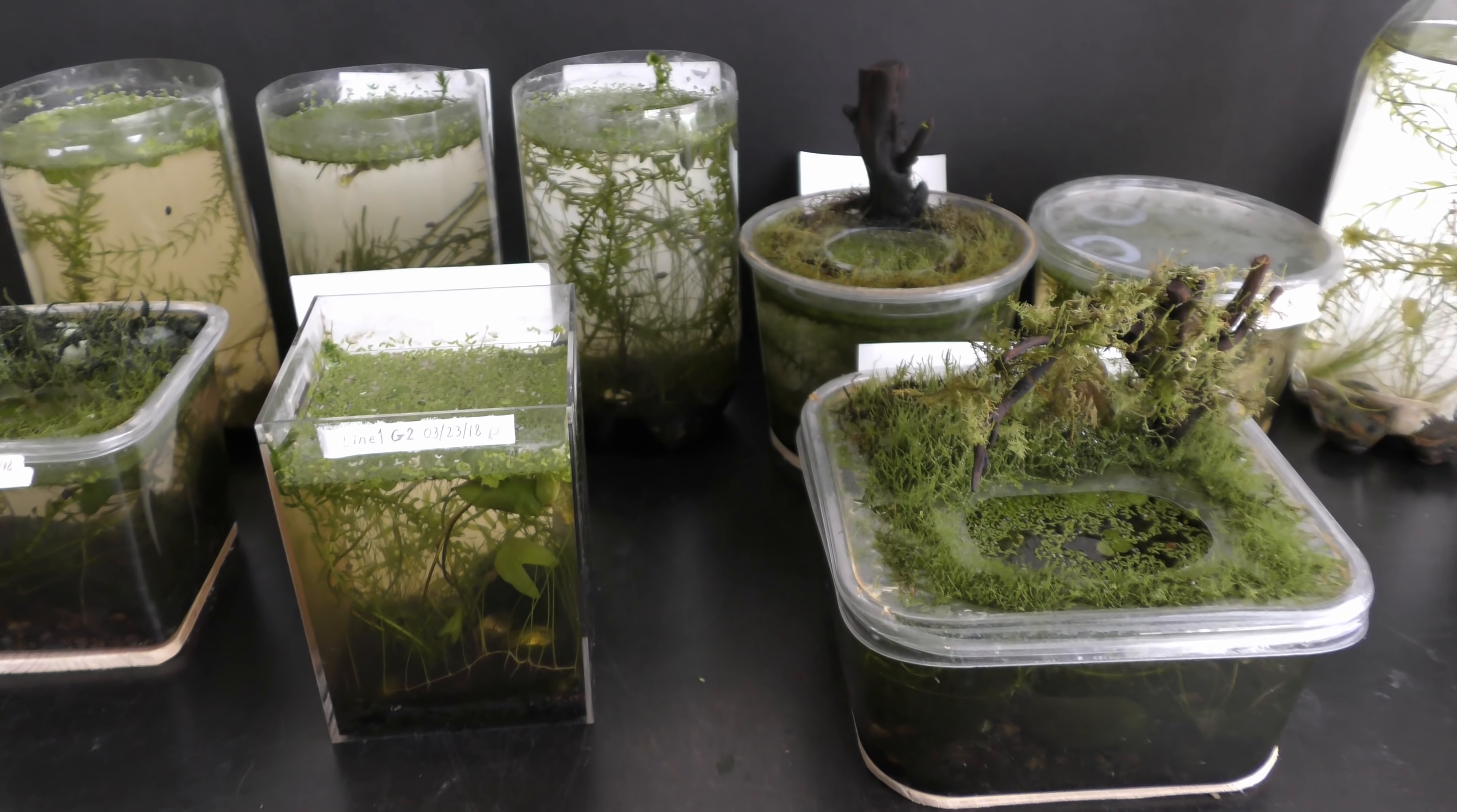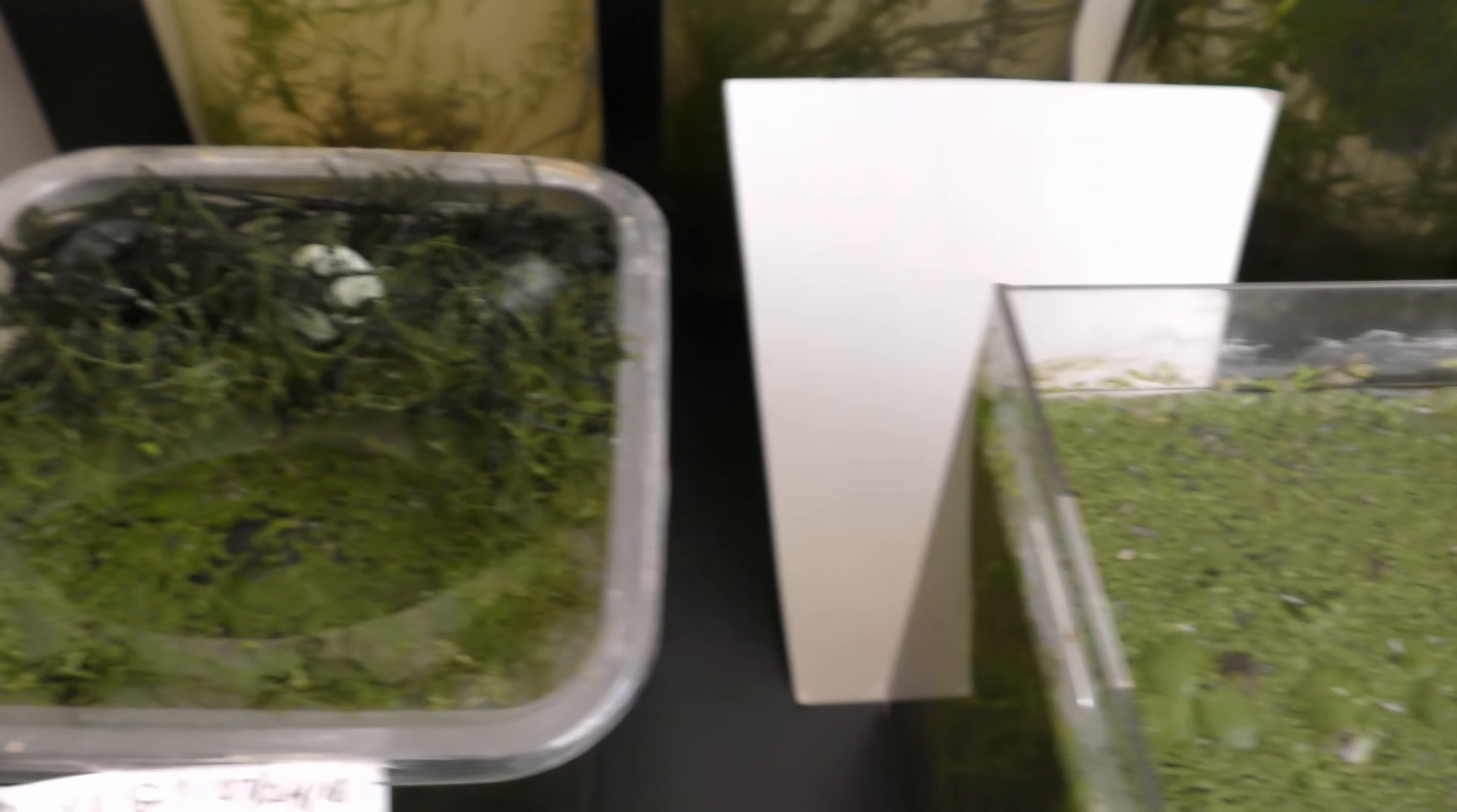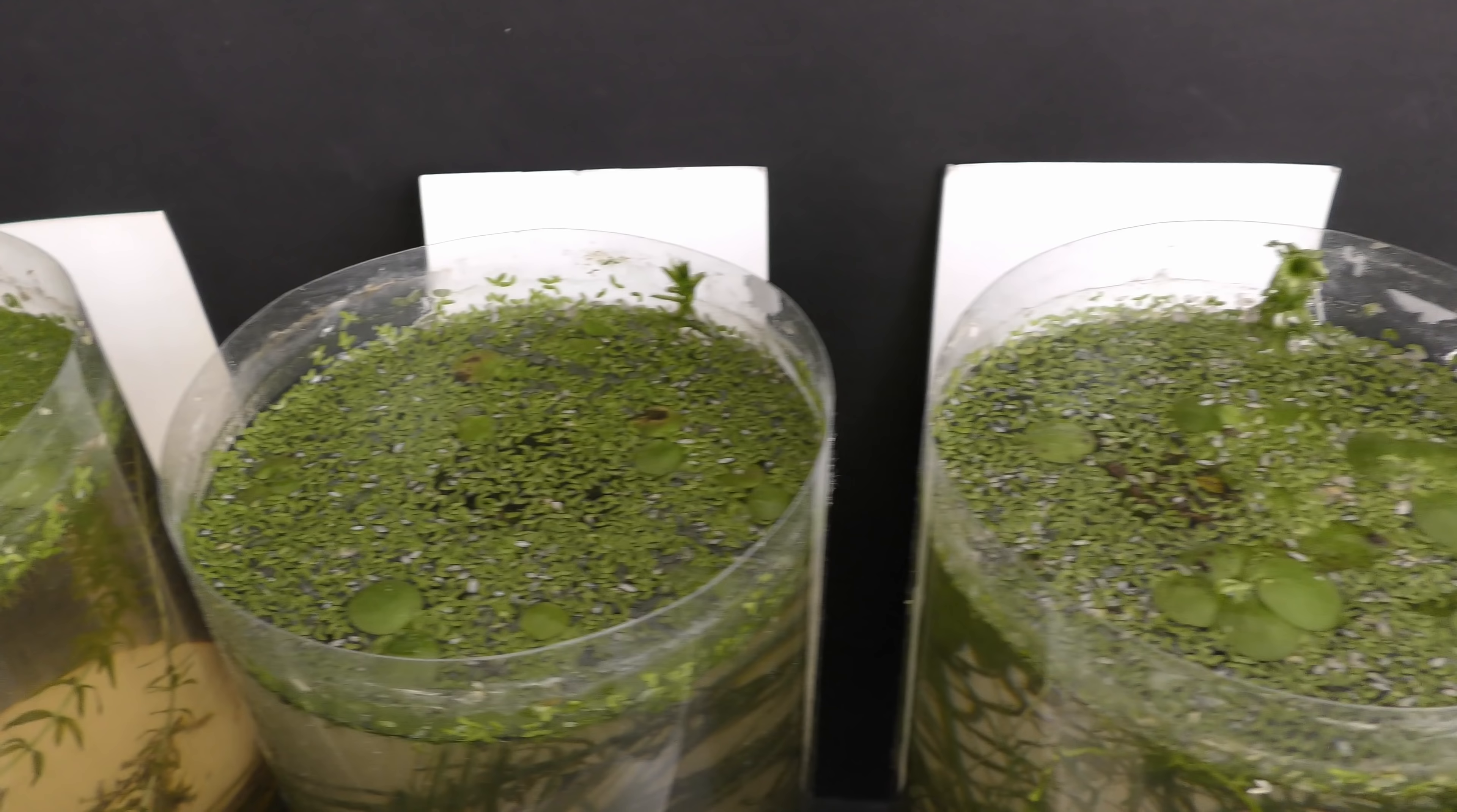Fast-growing floating plants like duckweed and frogbit are great for aquariums in many regards. Those plants can make a thick carpet on the water surface.